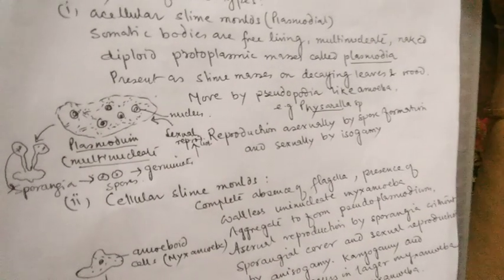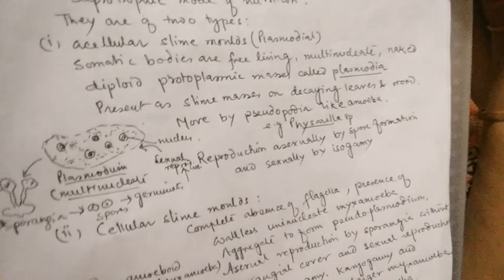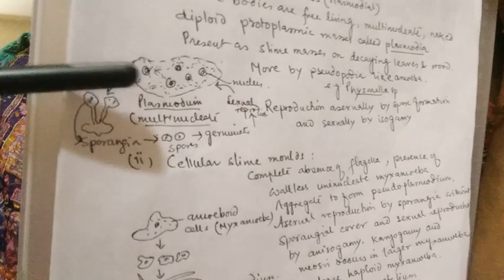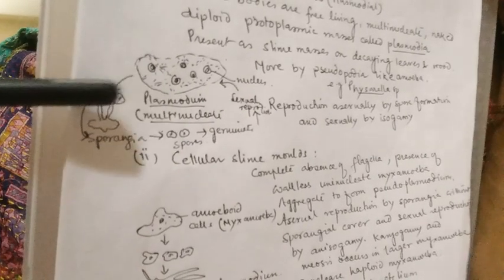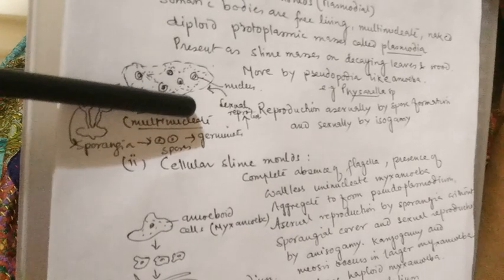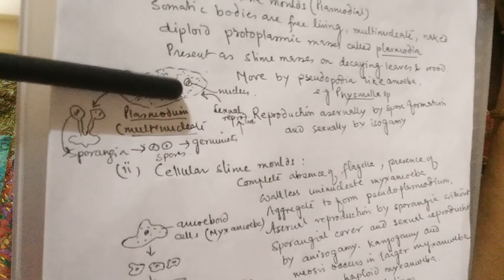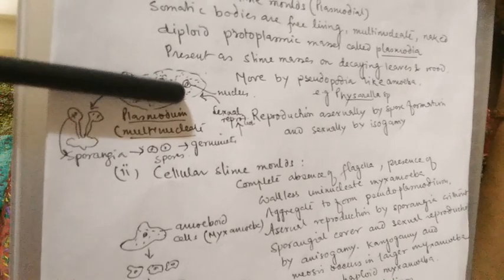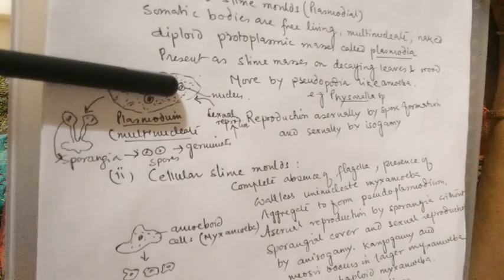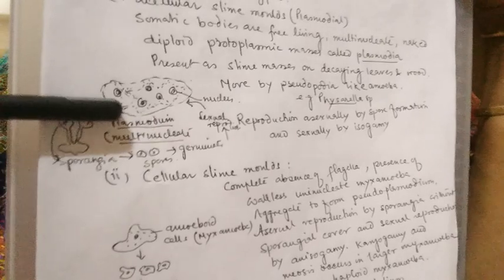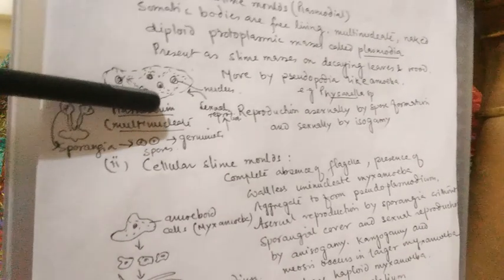Another group of protists are the slime molds, which are commonly called fungi-like protists. Like fungi, they do not have chlorophyll and do not perform photosynthesis. They are surrounded by plasma membrane only.